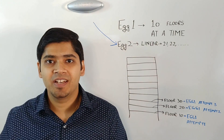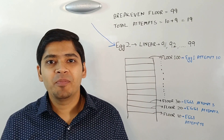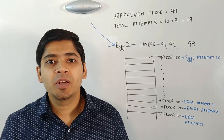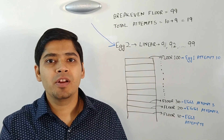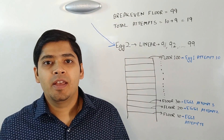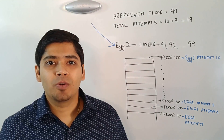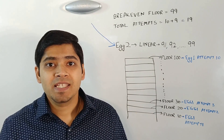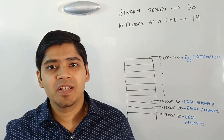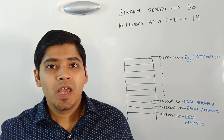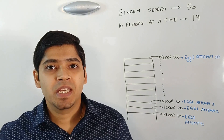What's the number of attempts in the worst-case scenario using this approach? Imagine the break-even floor was the 99th floor. We start egg 1 from floor 10, then 20, then 30, and so on up to floor 100, where egg 1 breaks. Then we start egg 2 from the 91st floor, then 92nd, 93rd, up until the 99th floor. The total number of attempts is 19 — 10 for egg 1 and 9 for egg 2. By using the 10-floors-at-a-time approach, we've improved from 50 attempts down to only 19 attempts in the worst case.